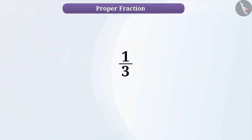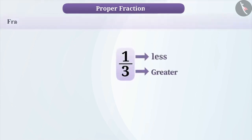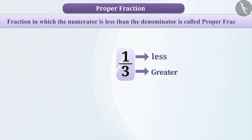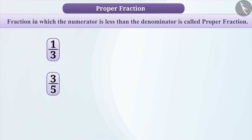As you can see, in this fraction, the numerator — that is 1 — is less than the denominator — that is 3. A fraction in which the numerator is less than the denominator is called a proper fraction. Similar to 1 by 3, there are some other fractions like 3 by 5, 6 by 7, etc.